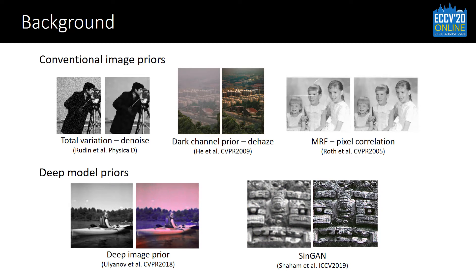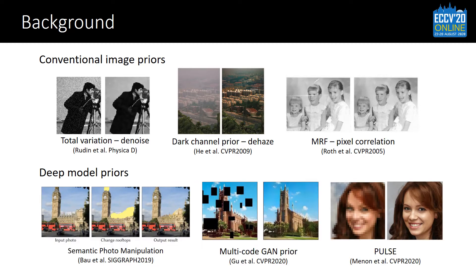For example, they cannot recover the color of a gray image. There are also works that use GAN as a prior for image processing. We will show that our method allows more diverse effects and achieves more precise reconstruction.